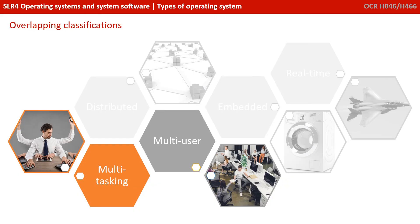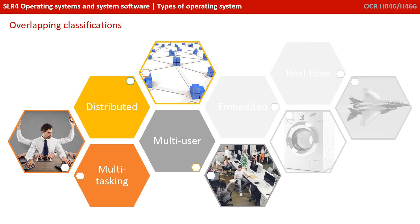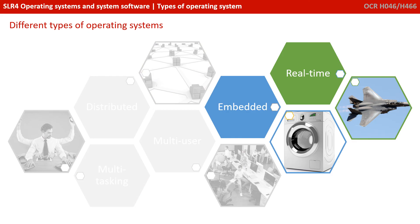A final thing to appreciate is that these five different operating system classifications we've discussed are not mutually exclusive. For example, the network you use at school or in an office would be a multi-user system that also allowed multi-tasking. Likewise, it would be perfectly acceptable to have a distributed system capable of multi-tasking with multi-users logging on at once. There would be nothing wrong with a real-time operating system on a fighter jet also being part of an embedded operating system.